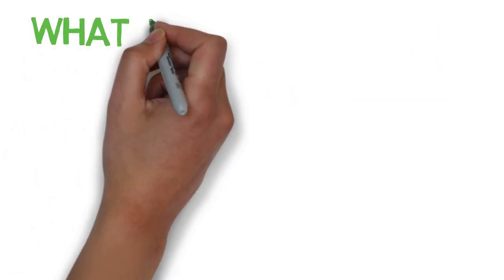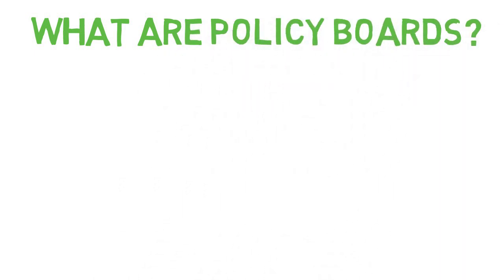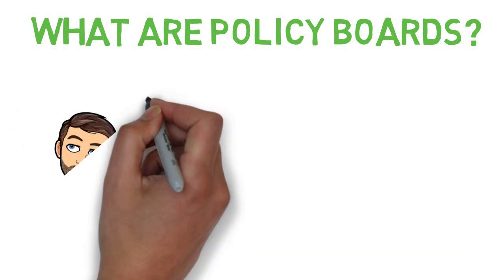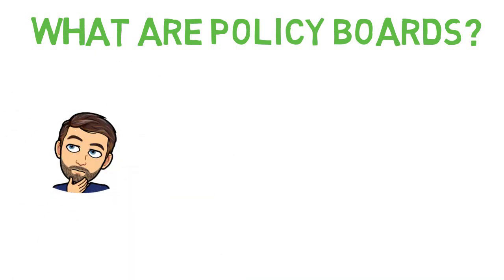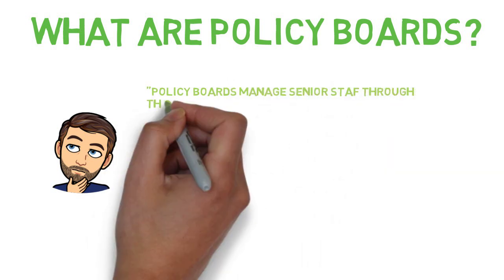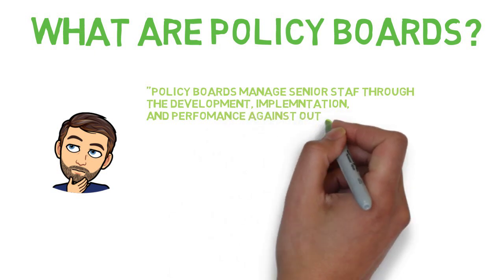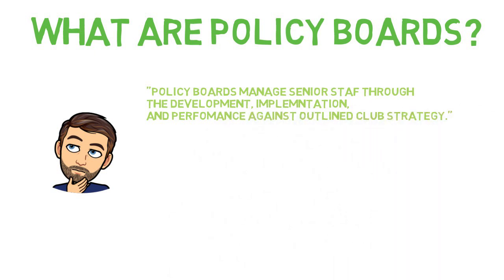Policy boards govern the club through policy implementation, meaning that policy boards are not involved in day-to-day decision-making within the club, but rather have operational oversight through senior staff. Policy boards manage senior staff through development, implementation, and performance against outlined club strategy. Policy boards require staff to carry out operations. Therefore, substantial resources are necessary for this model of governance to exist.